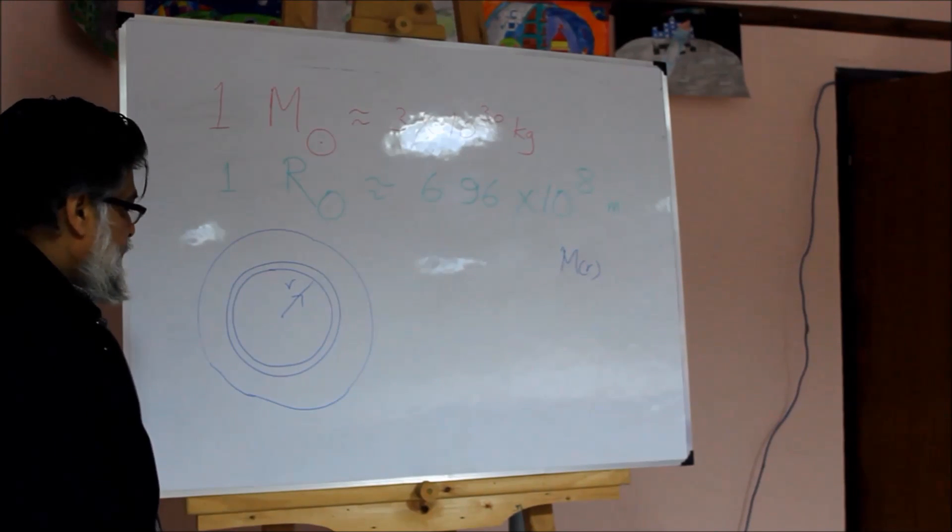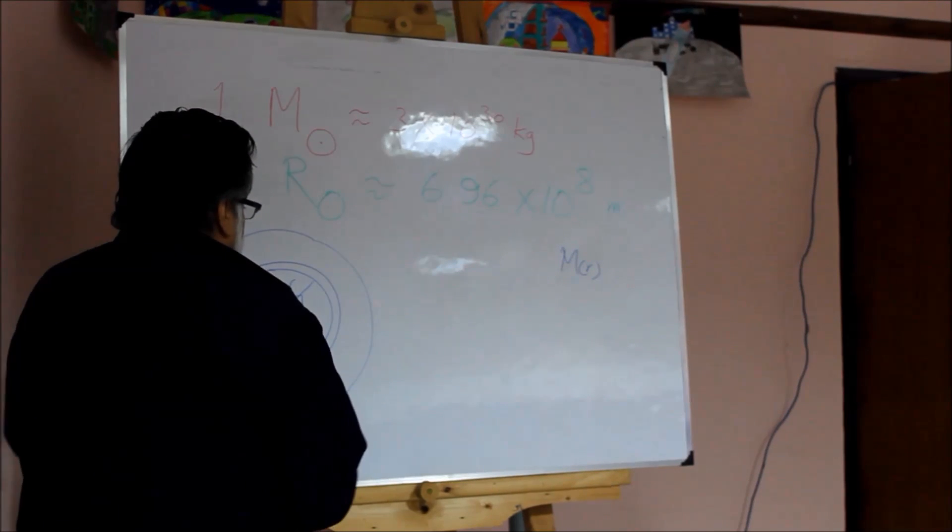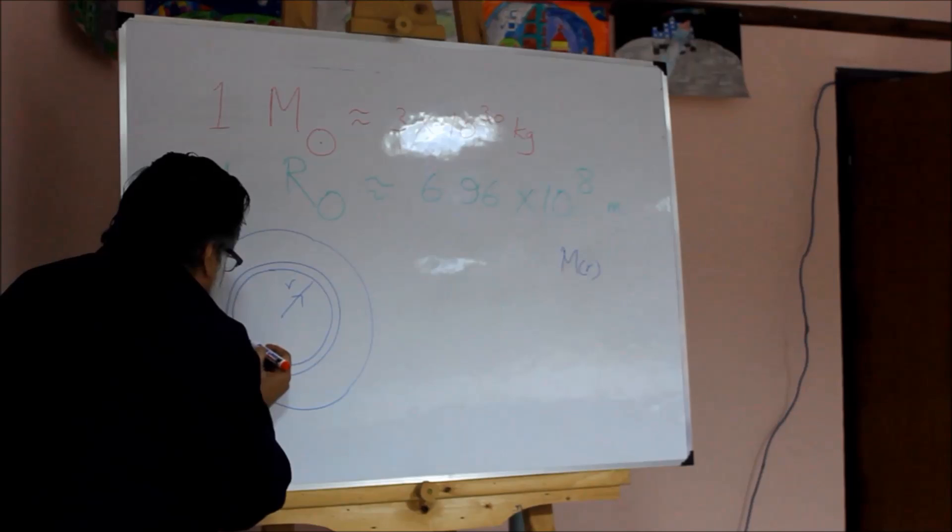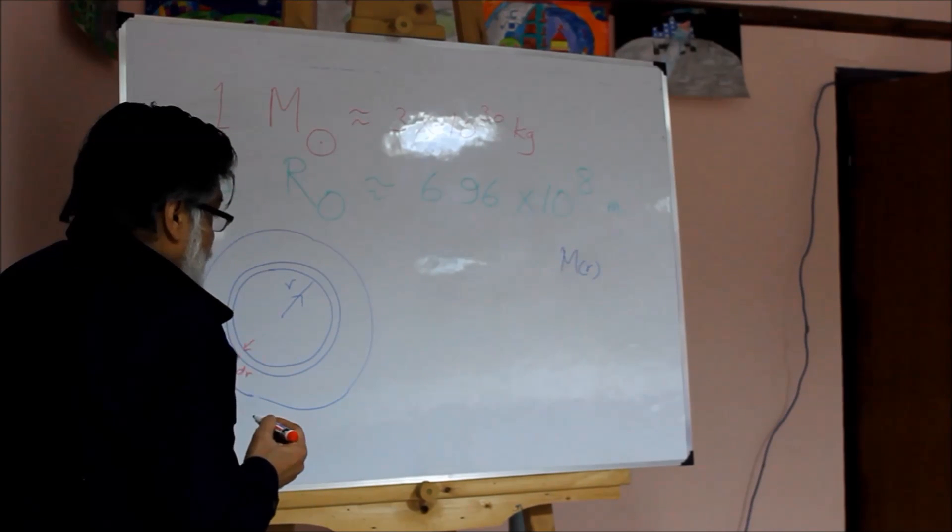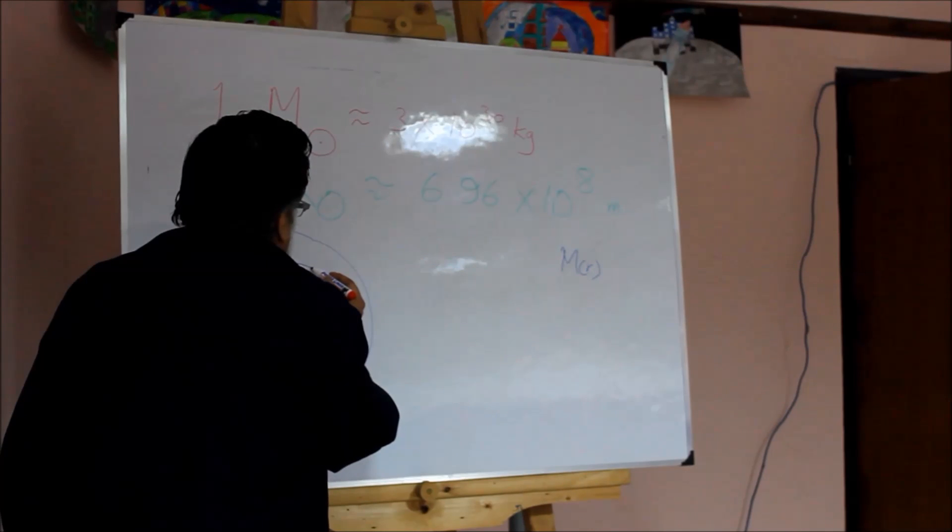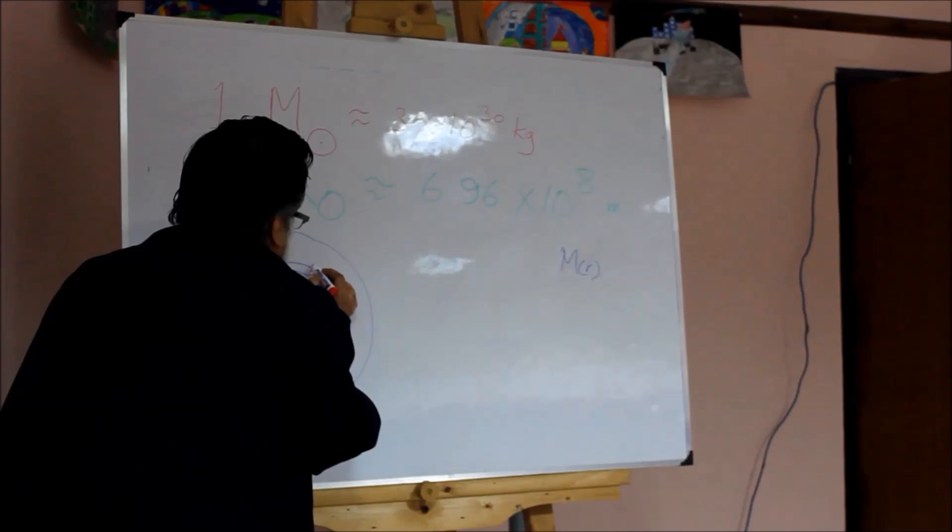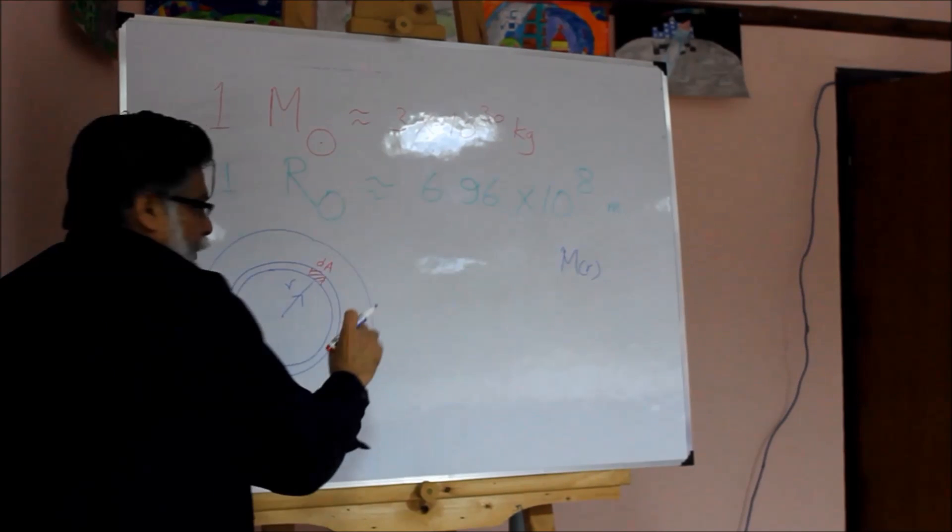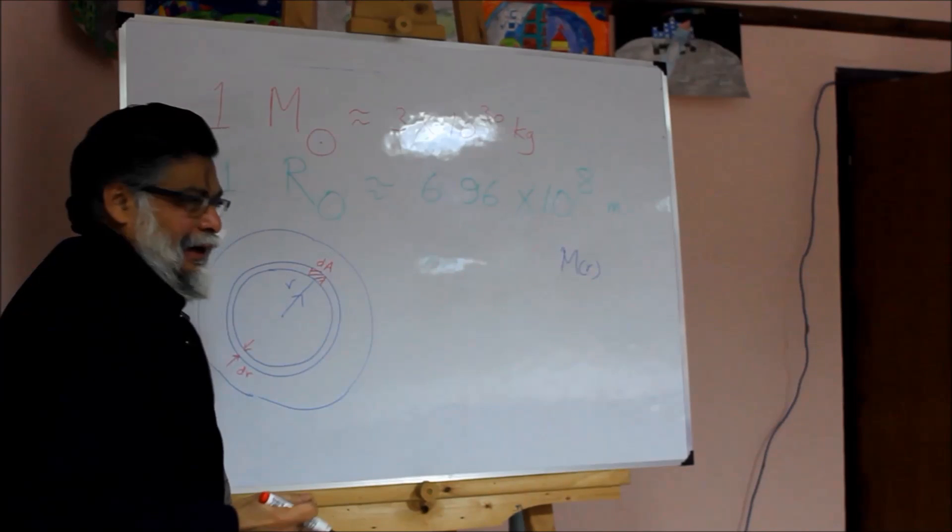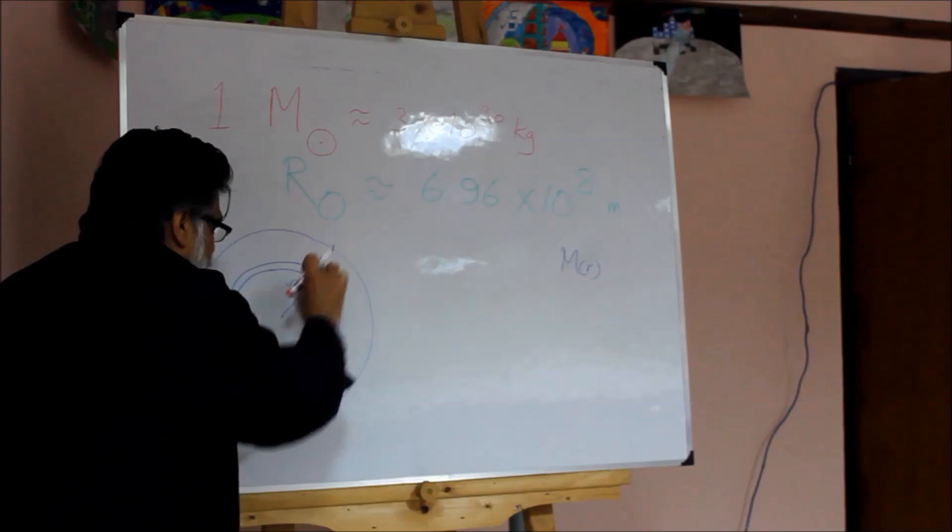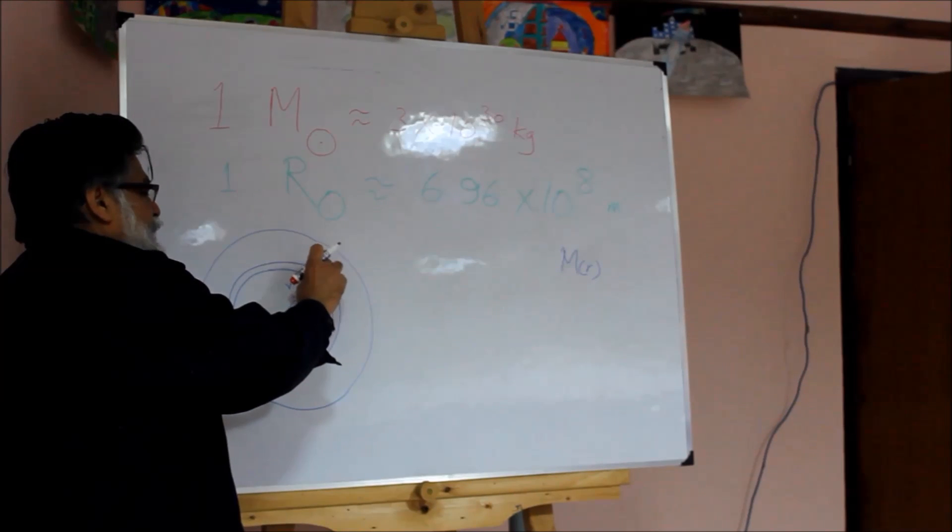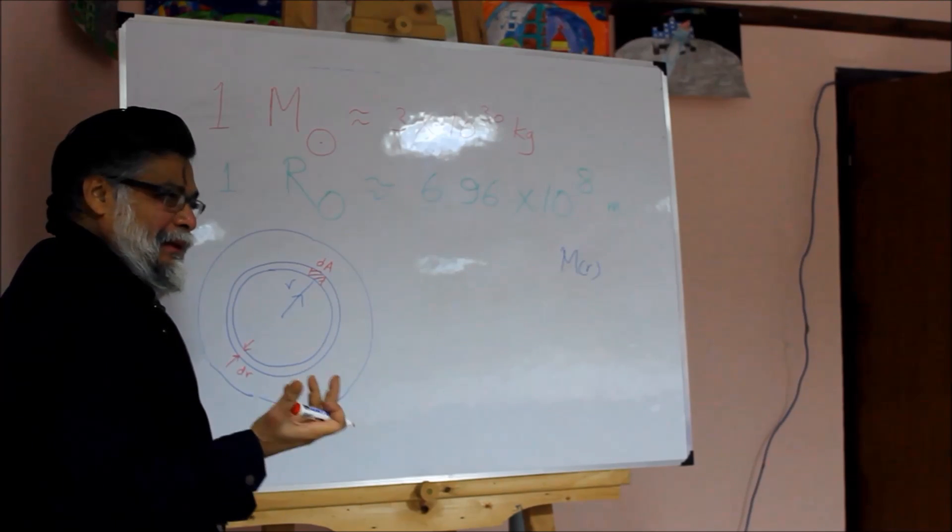We ask ourselves, if I take a shell with thickness dr, this thickness is very small. If I take a small volume element, whose surface area is dA and thickness is dr, a small segment of this spherical shell, what is the force this small volume element experiences due to gravity?